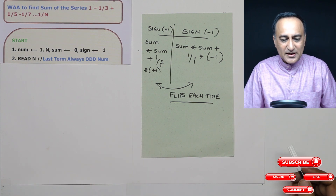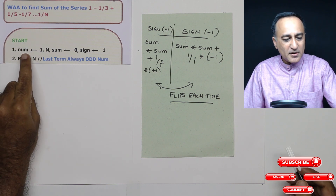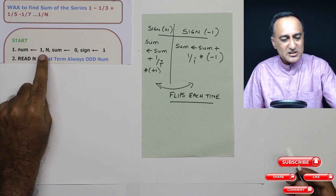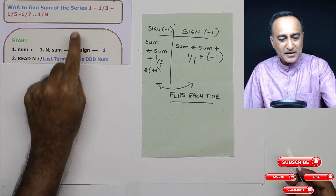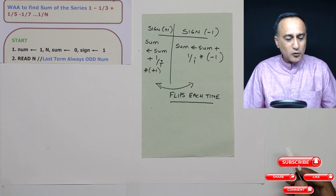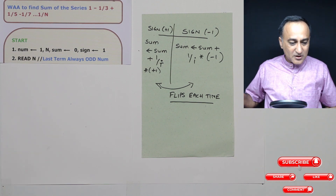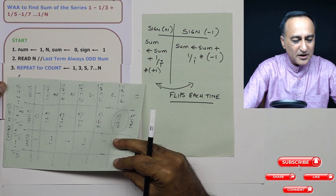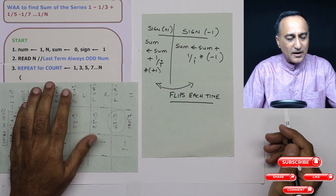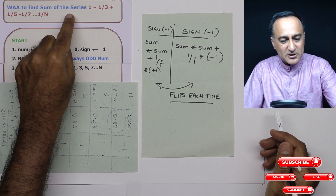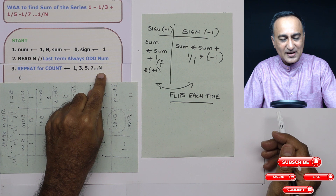Let us understand the variables we will use. The denominator is changing by two, so I will use a variable called number with initial value one. The end of the series is given by variable n, sum has initial value zero, and sign is one because the first operation is addition. I get the value of n from the user, then perform a repeat-for-count loop where count goes 1, 3, 5, 7, 9, all the way to n.